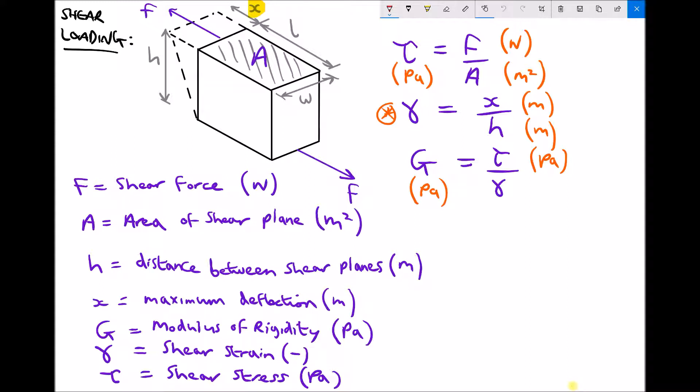The area that the direct loading acts across would be this area here - let's just call this A2 for the time being. So if a question also asked us to calculate the direct stress, we could do that based on the information we have there, because the direct stress would be the force divided by the area, but this time area 2. We have the dimensions for calculating area 2 - area 2 would be the width times the height. What this really highlights is the difference in area between the cross-sectional area for direct loading and the area of the shear plane when we're looking at shear loading.